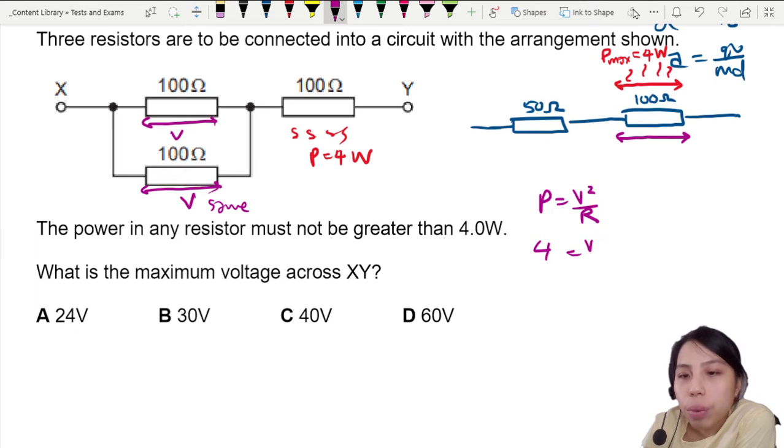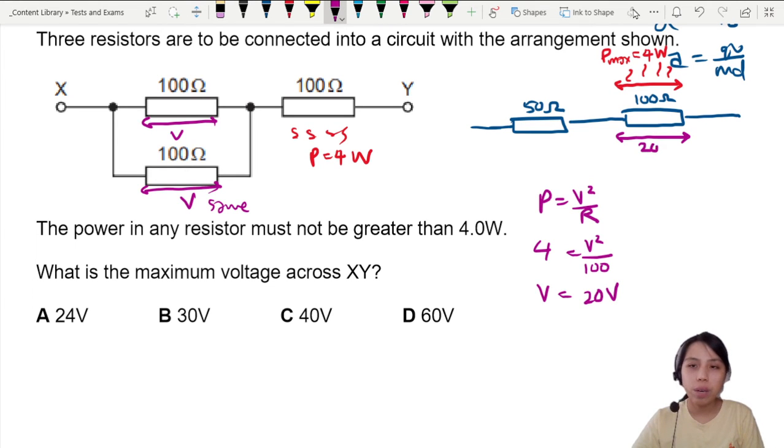Power 4 watts, what's the V? If you have 100 ohm, calculator, 4 times 100 square root of the thing is 20. 20 volts. So this fella will take 20 volts.